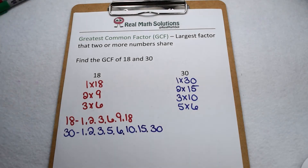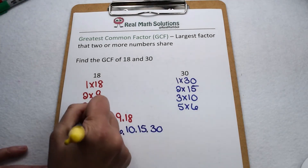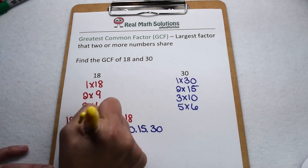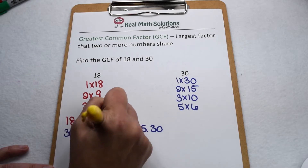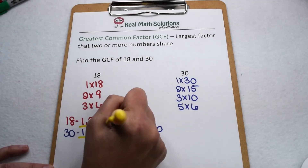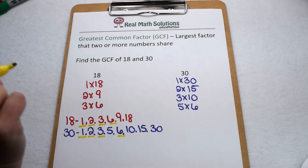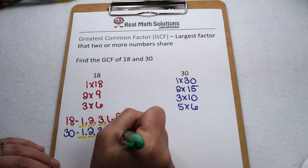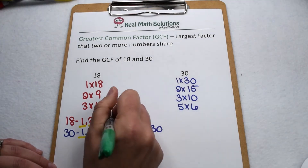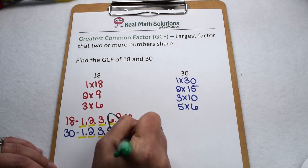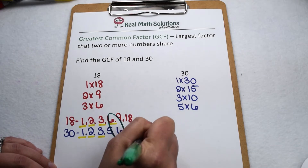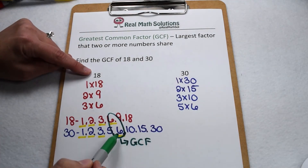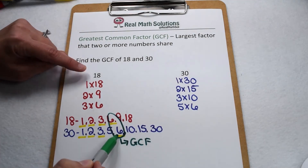Now we want to see which factors they have in common. 1 is a factor of both 18 and 30, so is 2. 3 is on both lists, as well as 6, but we're specifically looking for the greatest common factor. The greatest factor that they have in common is 6, so that tells us the greatest common factor of 18 and 30 is 6.